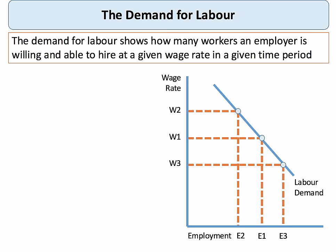The key thing is that the demand for labour is derived from the goods and services that labour produces. Typically the labour demand curve is similar to a demand curve for goods and services — we're thinking about labour as a factor of production here. On the y-axis we have the wage rate and on the x-axis we have the quantity employed, the number of people employed.